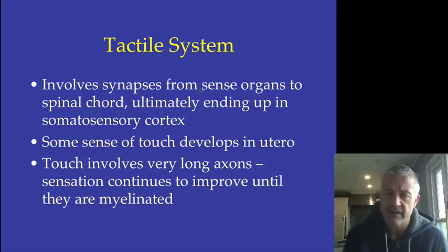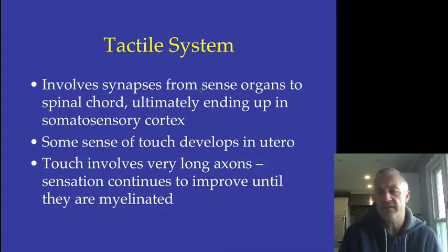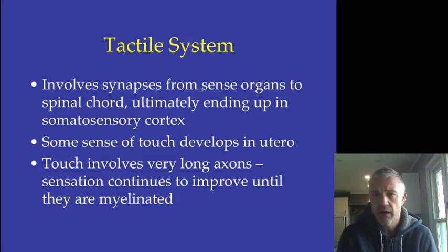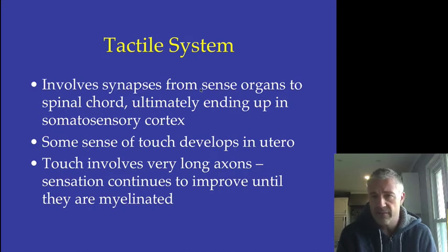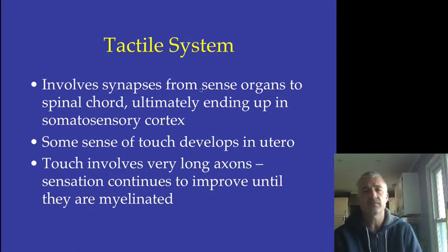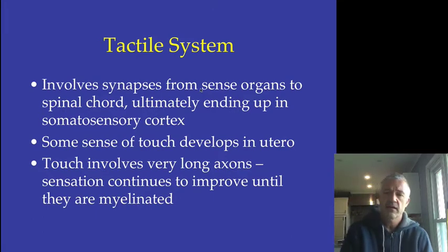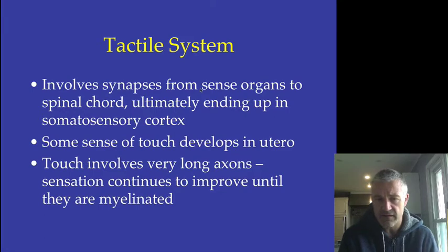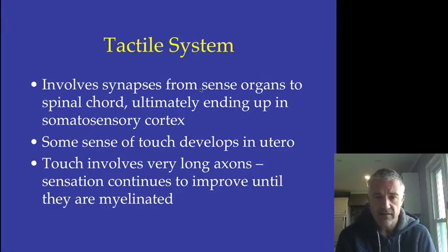What I want to talk about is the idea of the general senses, which involves the tactile system. This involves signals going from the sense organs up through the spinal cord on afferent nerves up to the somatosensory cortex. Some of this develops very early in life. These neurons tend to have really long axons, and our sensation improves as more myelination is completed during development.